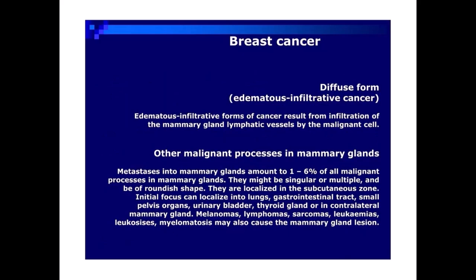Diffuse form — edematous infiltrative cancer. Edematous infiltrative forms of cancer result from infiltration of the mammary gland lymphatic vessels by malignant cells. Other malignant processes in mammary glands: metastases into mammary glands amount to 1–6% of all malignant processes. They might be singular or multiple and be of roundish shape, localized in the subcutaneous zone. Initial focus can localize into lungs, gastrointestinal tract, small pelvis organs, urinary bladder, thyroid gland, or contralateral mammary gland. Melanomas, lymphomas, sarcomas, and leukemias may also be involved.